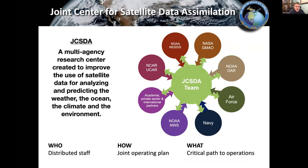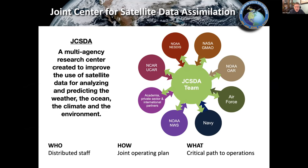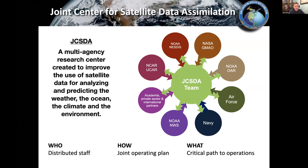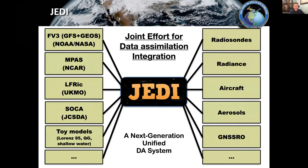The Joint Center for Satellite Data Assimilation is housed in UCAR community programs, but we have many partners: different divisions of NOAA — NESDIS, OAR, NWS — the NASA GMAO, and the Air Force and the Navy are all JCSDA partners. We also work with NCAR and the UK Met Office. It's a multi-agency research center dedicated to improving the use of satellite data and all observational data for the prediction of weather, ocean, and climate.